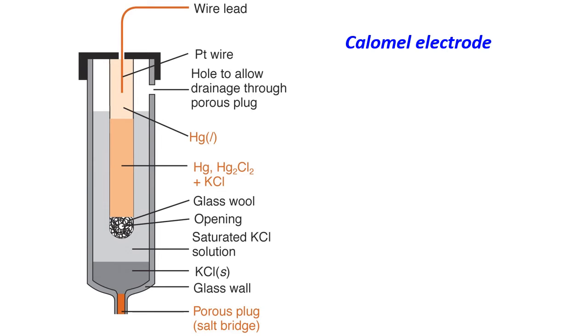An alternative to silver electrode is calomel electrode. So here, instead of silver, we have liquid mercury with Hg2Cl2, mercury chloride, and KCl.